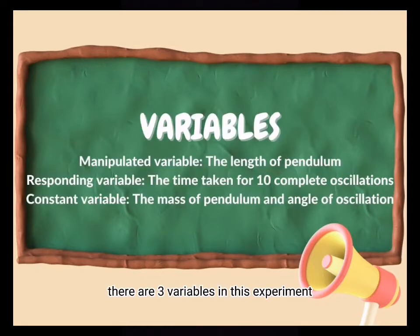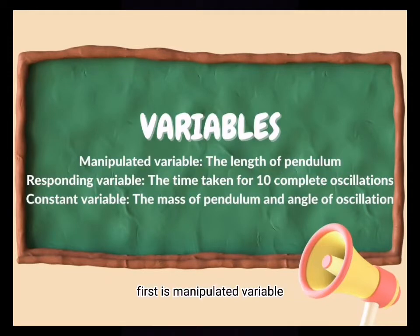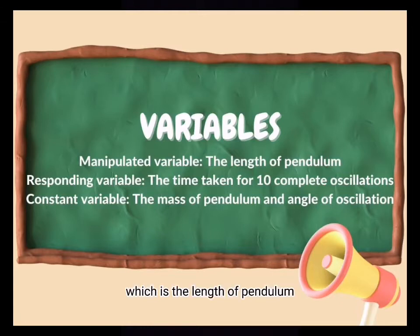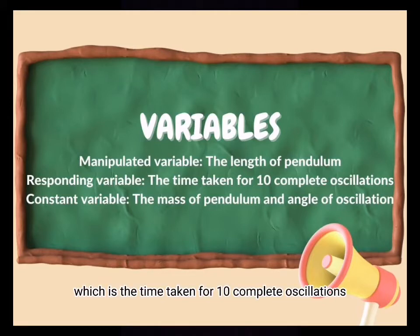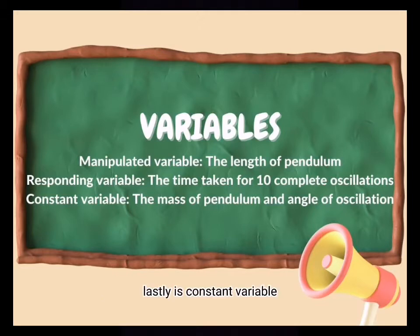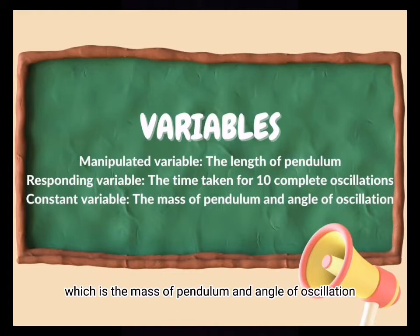There are three variables in this experiment. First is the manipulated variable, which is the length of the pendulum. Then is the responding variable, which is the time taken for 10 complete oscillations. Lastly is the constant variable, which is the mass of the pendulum and the angle of oscillation.